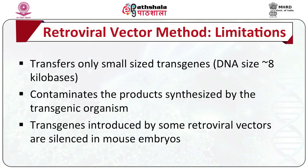Consequently, it contaminates the product synthesized by the transgenic organism. This has serious limitations if the transgenic organism is to be used as food. In addition, transgenes introduced by some retroviruses are silenced in mouse embryos. Vectors derived from lentivirus have been used successfully to introduce a variety of transgenes into embryonic cells of mice, pigs, cattle, and birds. Lentiviruses are also often used as a delivery vehicle to introduce transgenes to decrease gene expression by RNA interference, that is RNAi.